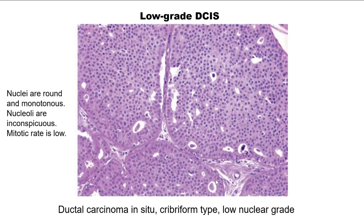Here is an example of low-grade DCIS showing relative uniformity of cells filling the lumen — not all that different from ADH-type nuclei, except with full duct involvement and multiple ducts involved. The nuclei are round, monotonous, and nucleoli are inconspicuous. In general, you will not see prominent macronucleoli, and mitotic activity, while possible, is not as frequent as in higher grades of DCIS.